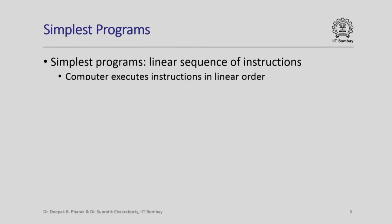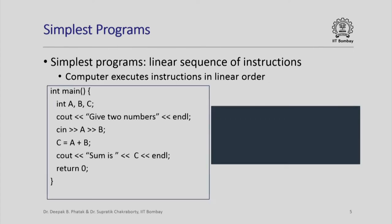The simplest programs we can write are basically a linear sequence of instructions, and the computer executes these instructions in the same linear order in which they appear in the program. For example, on the left pane here you can see our friendly summing program which reads two integers, adds them up, and prints the sum out on your screen.